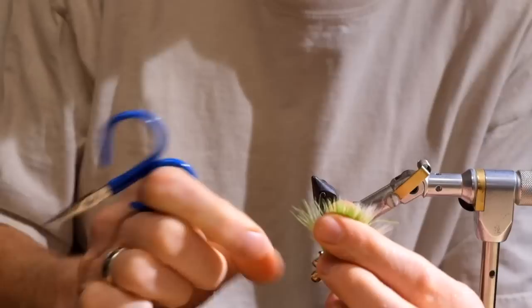And there, you have the Deep Six. Terrific coho fly. This fly in several colors should be in your Silver Salmon Fly Box. We'll see you next time.